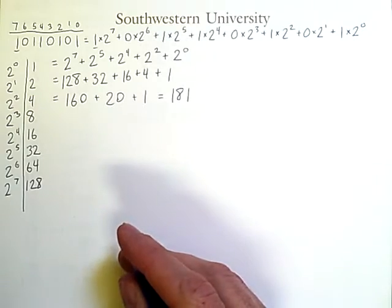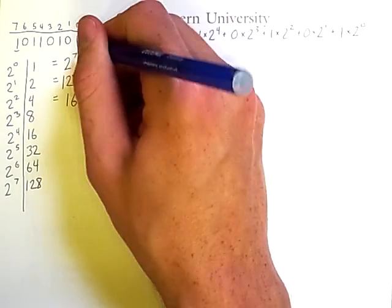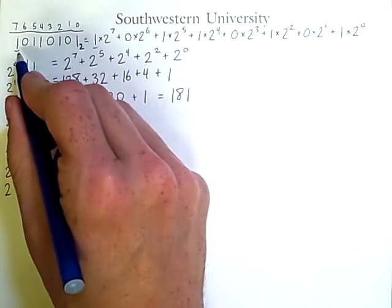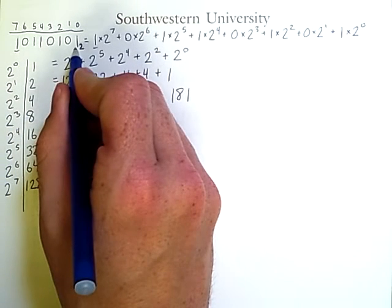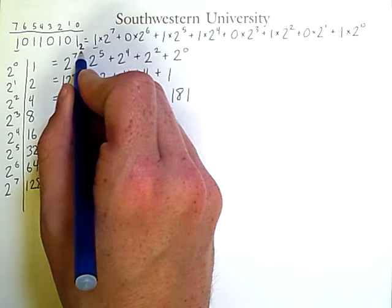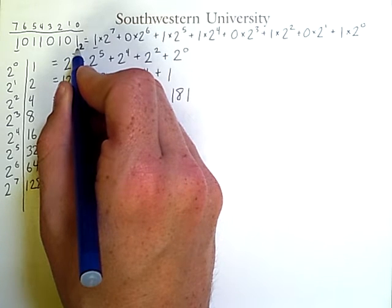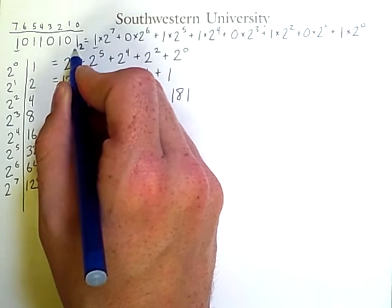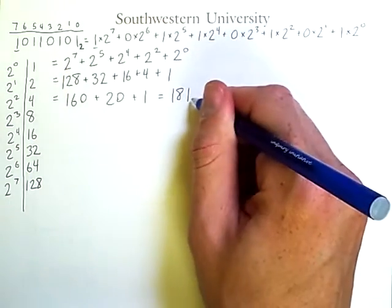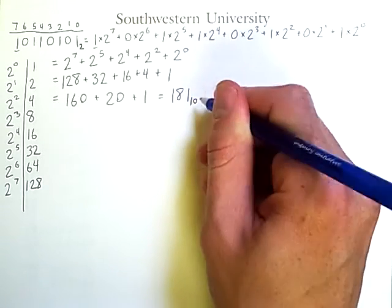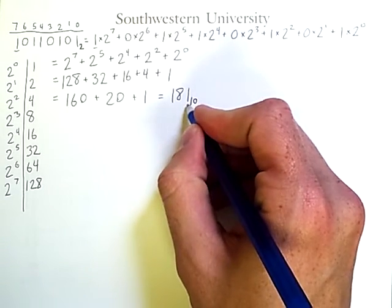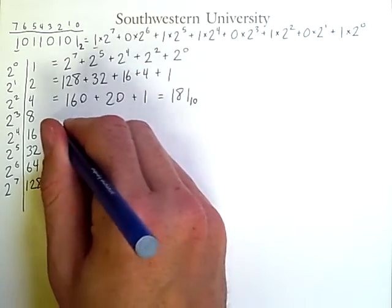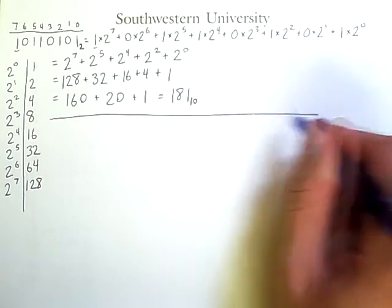Now, sometimes we will distinguish binary from decimal numbers by putting the base in the lower right-hand corner of the number. So I know this is a binary number because there's a little 2 here. Otherwise, I might mistakenly interpret it as just a very big decimal number that happened to only use 1s and 0s. Likewise, I can put a little 10 in the lower right of 181 to indicate that this is a base 10 number.